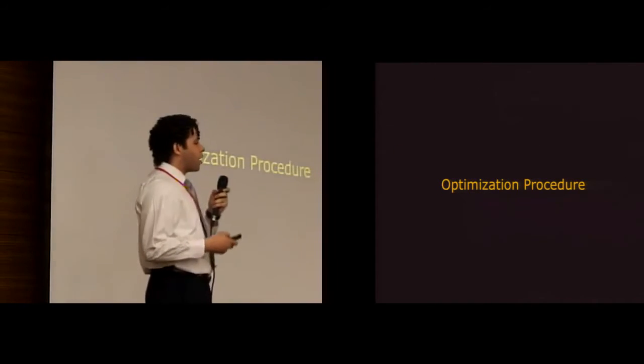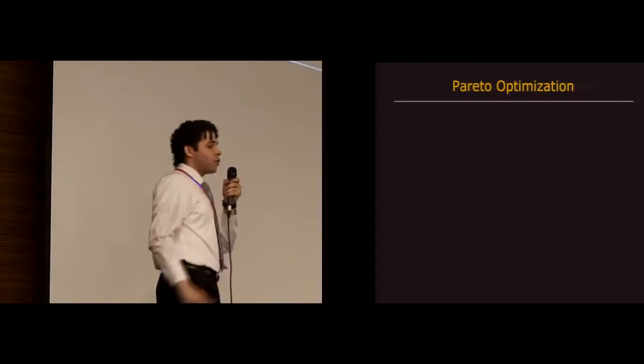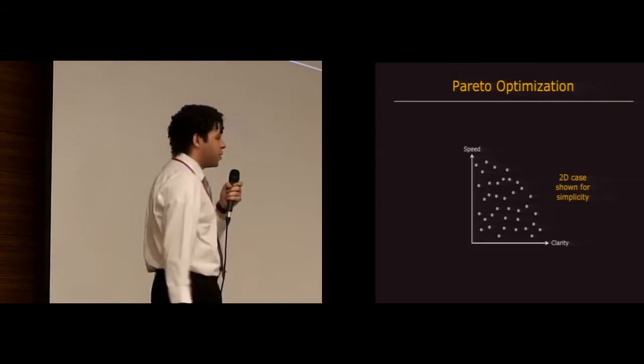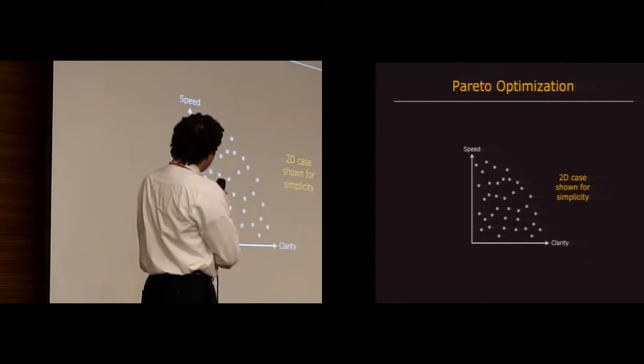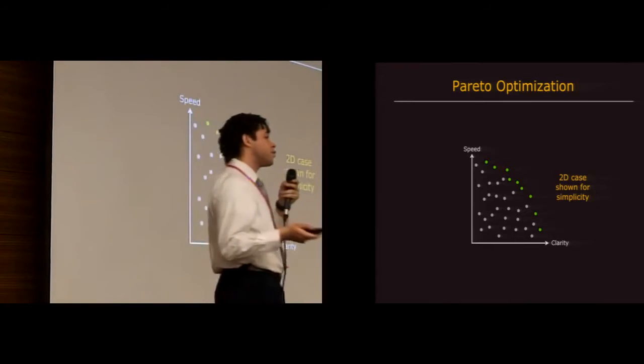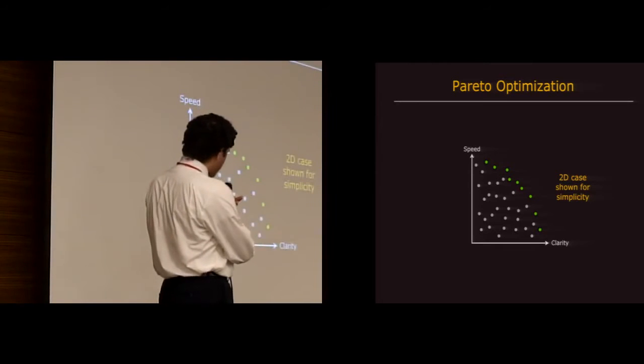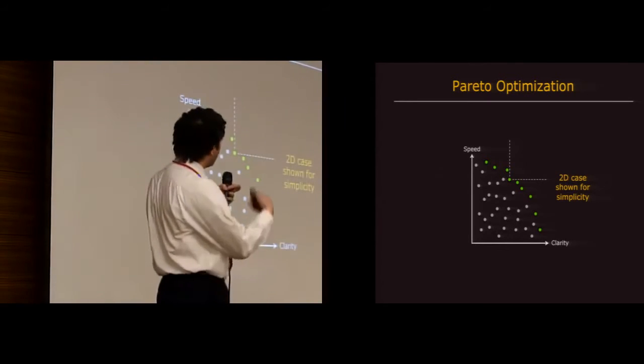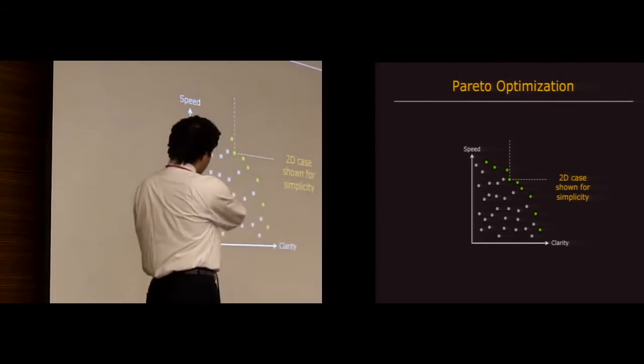So now I'll talk about how we actually performed the optimization. So rather than find one sort of gold standard keyboard layout that somehow is awesome for all three different metrics, we instead use a process called Pareto optimization, which takes a set of points—so think of these as keyboard layouts and their associated metric scores—and computes what's called a Pareto optimal set. That's this set here, also called a Pareto frontier, or a Pareto front for short, which represents layouts that are at the cusp of greatness, so to speak. So these layouts have the property that they're not dominated by any other layout, meaning no other layout is better than these layouts in all of the metrics. So our optimization is in 3D, but here I'm showing 2D just for simplicity.